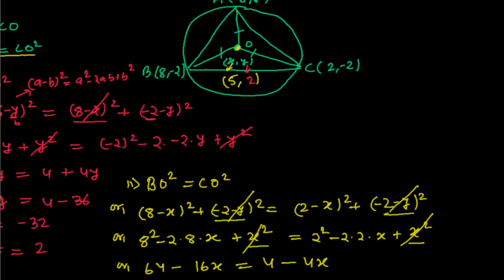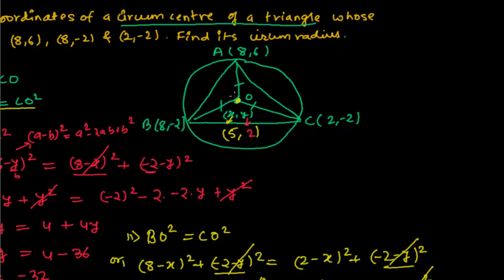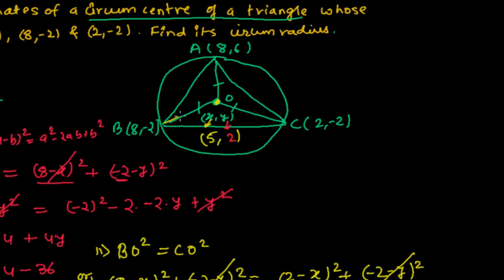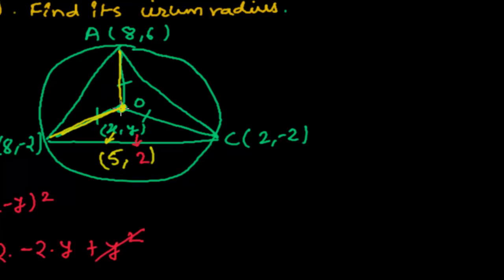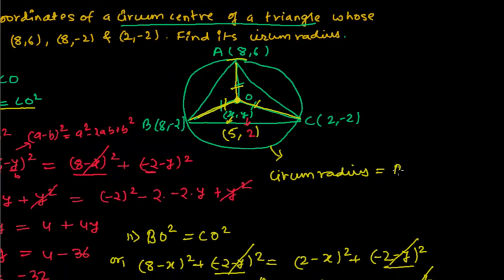The question also asks for the circumradius, which is the distance from the circumcenter to any vertex. The circumradius equals AO = BO = CO. Let me calculate BO.